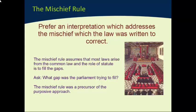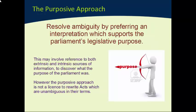The Mischief Rule has led over time to the unquestionably dominant modern approach to interpreting statute: the purposive approach. The purposive approach says we resolve ambiguity by preferring an interpretation which supports Parliament's legislative purpose. When we are looking at a statute, we start by thinking — what did Parliament intend to accomplish? What was the purpose of this legislation? If there is an ambiguity, we resolve it by preferring an interpretation which supports that purpose. Last week we met intrinsic and extrinsic sources of information about a Bill, and all of these can be used to help us discover what Parliament's purpose was when the legislation was passed.